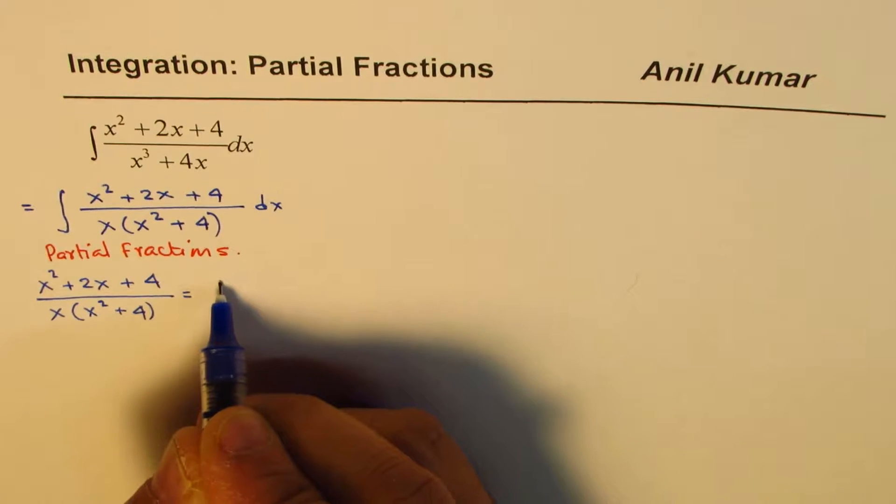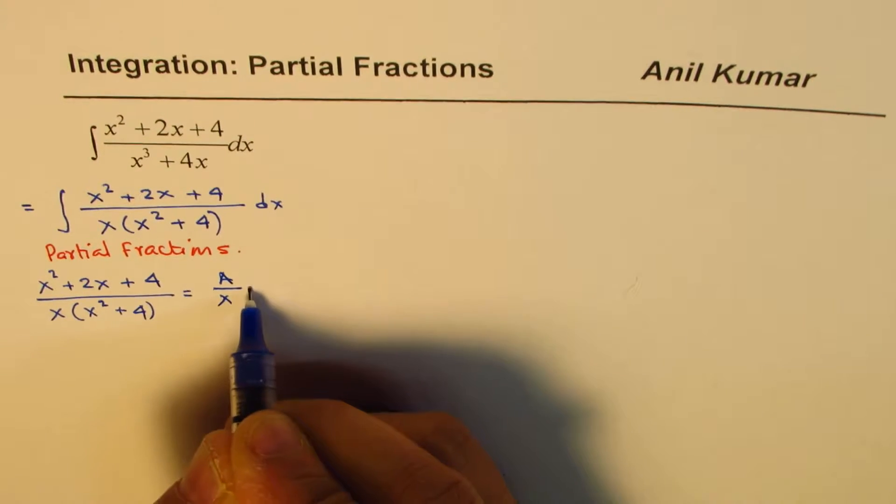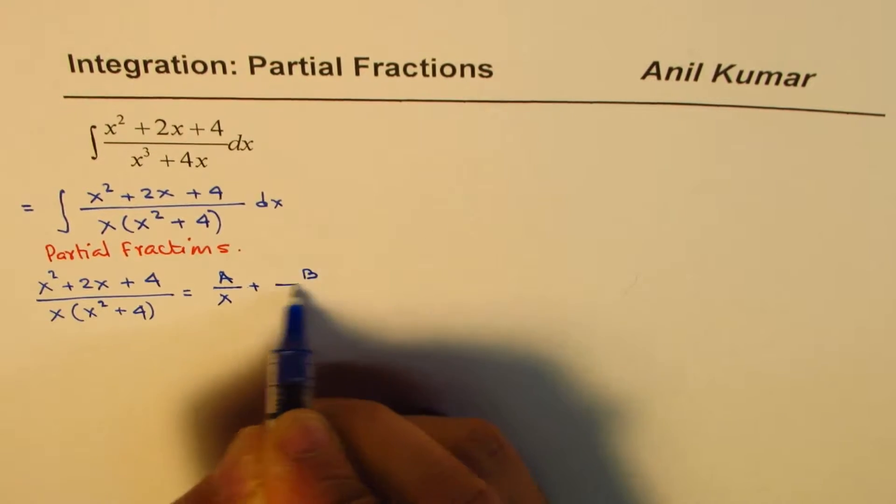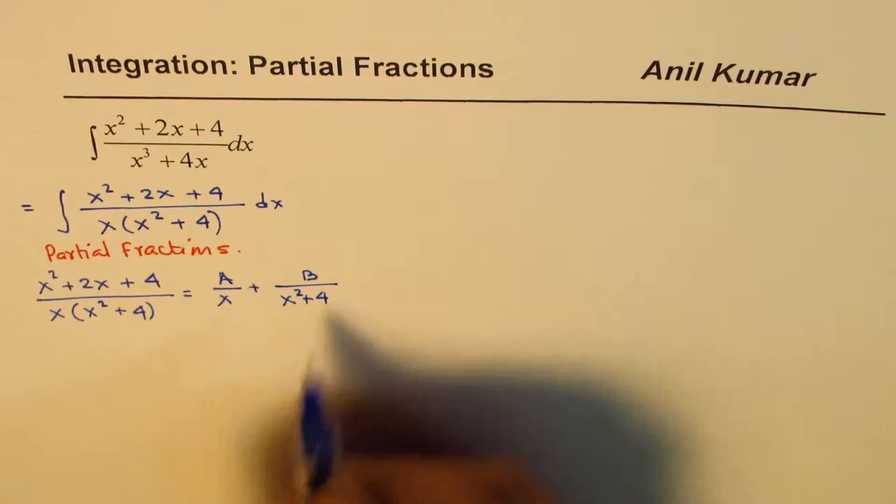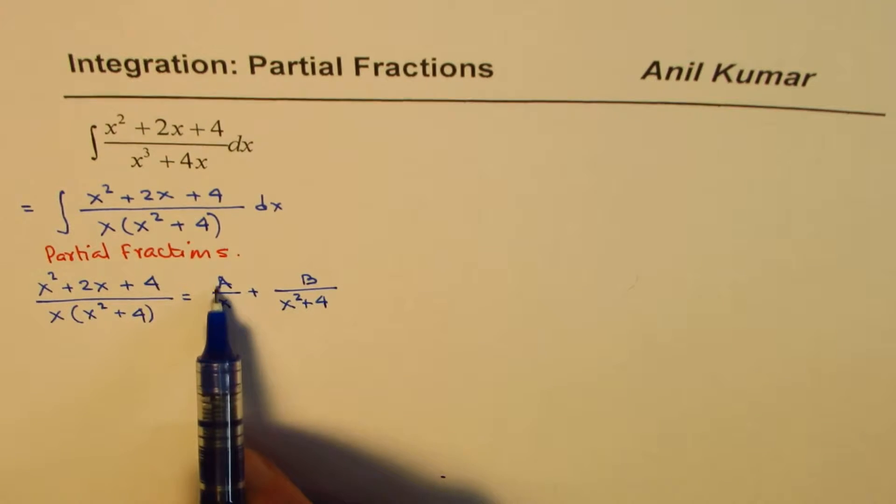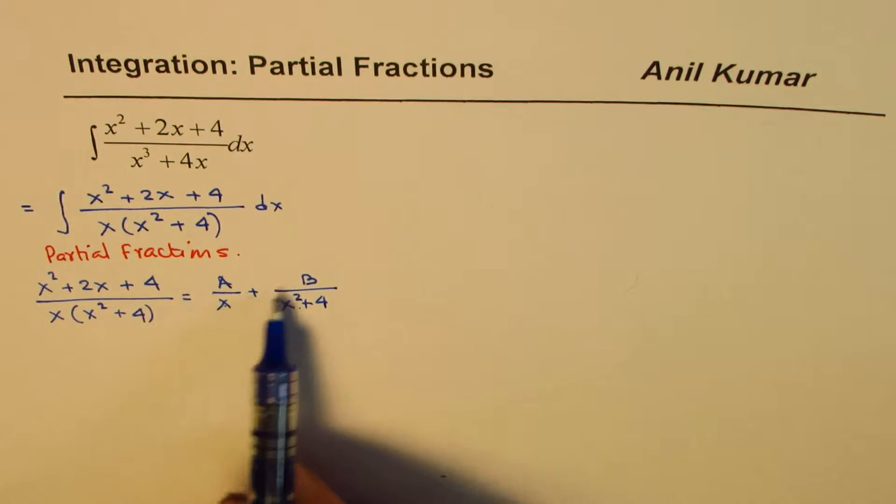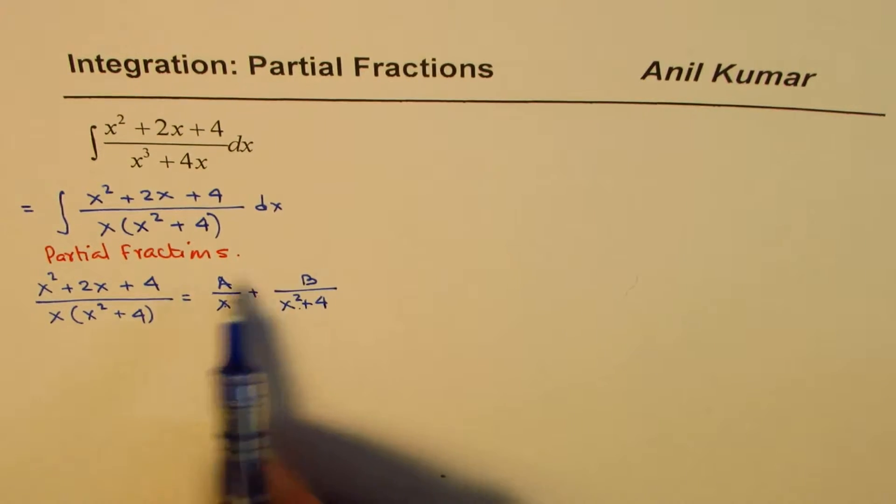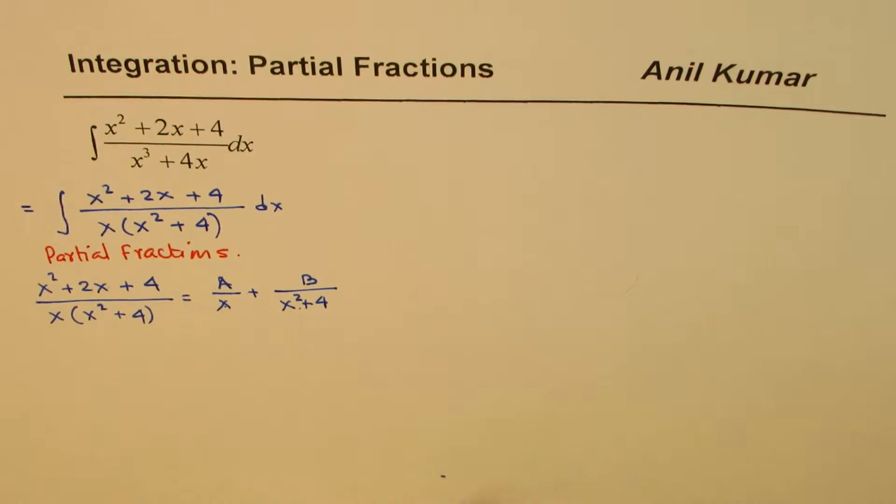So we have this expression which is x squared plus 2x plus 4 over x times x squared plus 4. This could be written as A over x plus B over x squared plus 4. So that is a strategy.